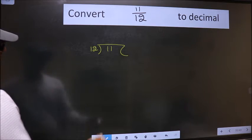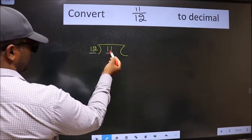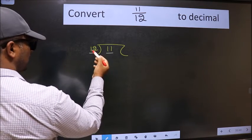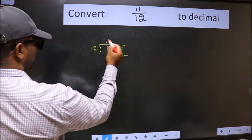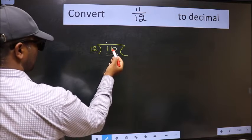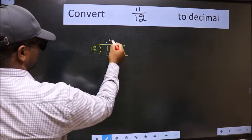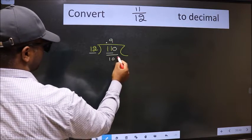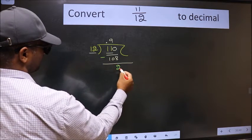Next, here we have 11 and here 12. 11 is smaller than 12, so what we should do is put a dot and take 0. So 110. A number close to 110 in the 12 table is 12 times 9 equals 108. Now we should subtract. We get 2.